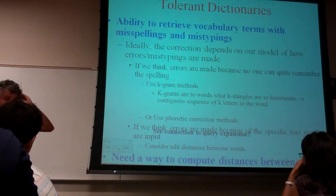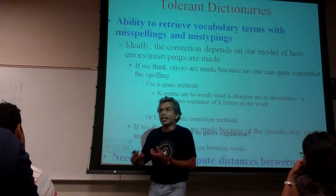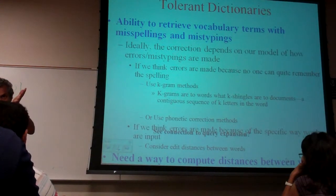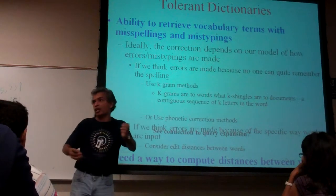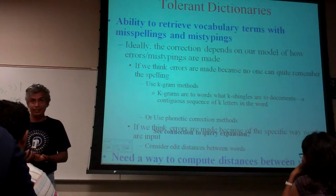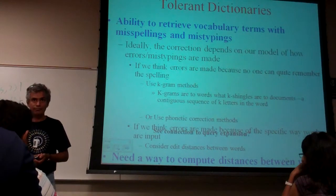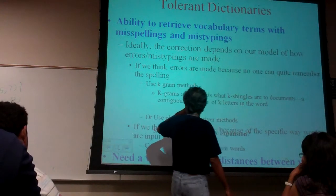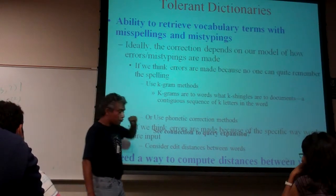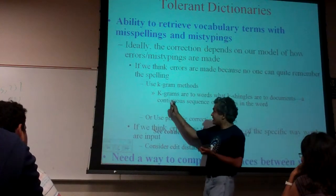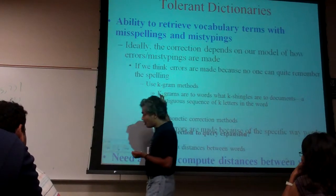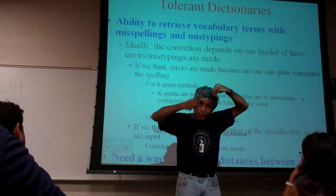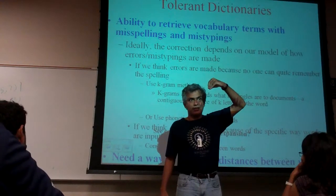There are also other ways of checking for errors. Suppose there are multiple words at the same k-gram distance from the query word, and I want to see which one the user was trying to type. Not all errors are created equal — certain errors are much more likely than other errors when you're typing.